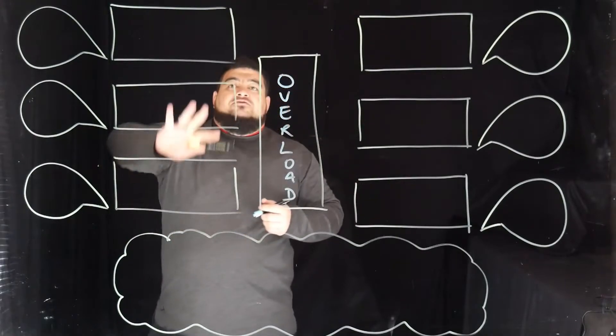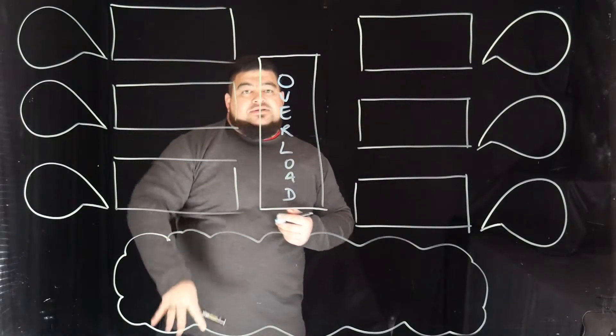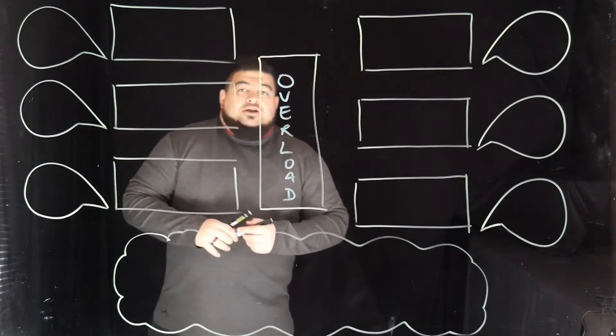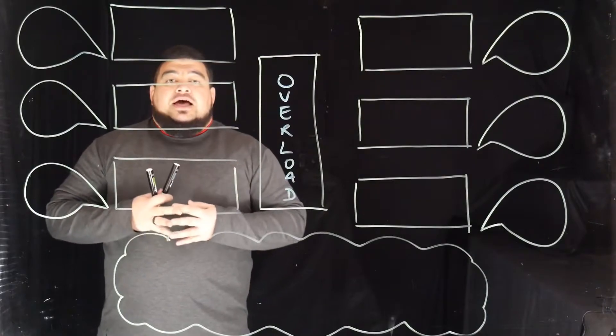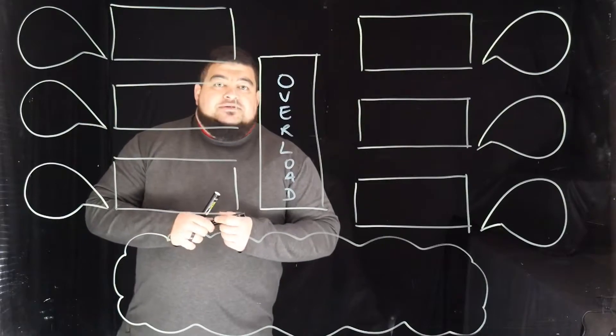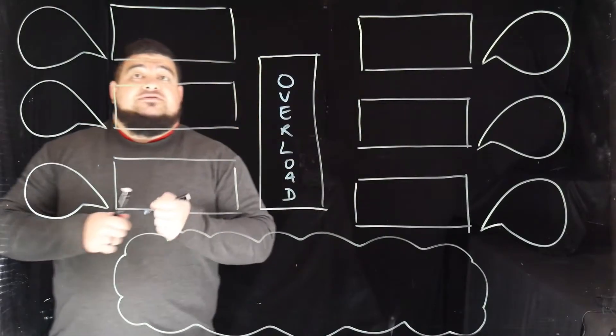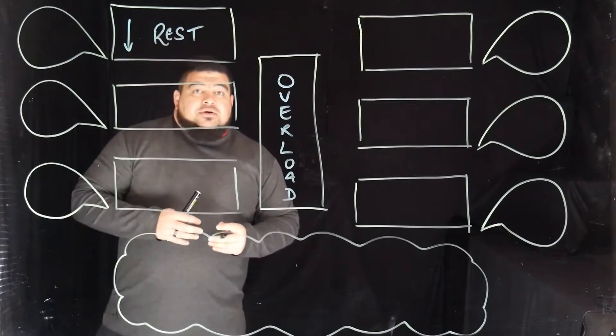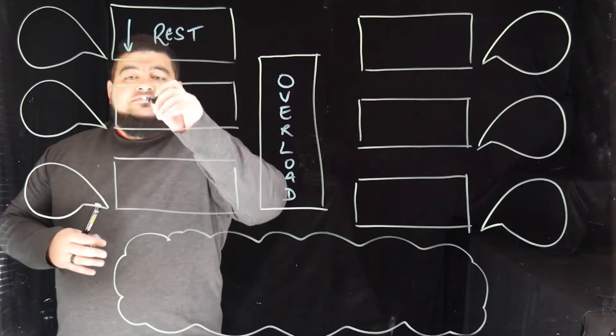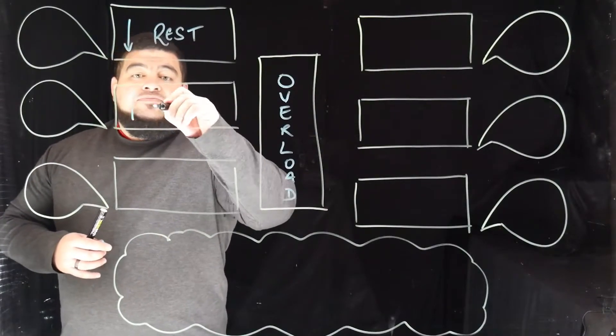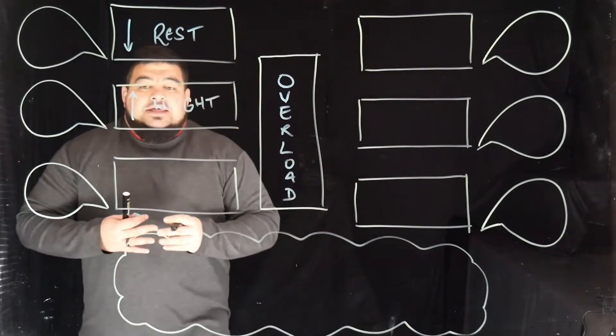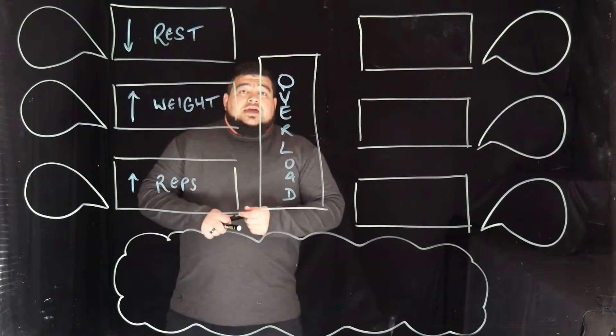We'll put overload on this side. So why do we overload? Usually there are three or four reasons why we overload. The first one is because we decrease our rest. The next one - in the gym when we are going to reach overload - is that we increase our weight or resistance. Another thing we do to reach overload is to increase our reps.